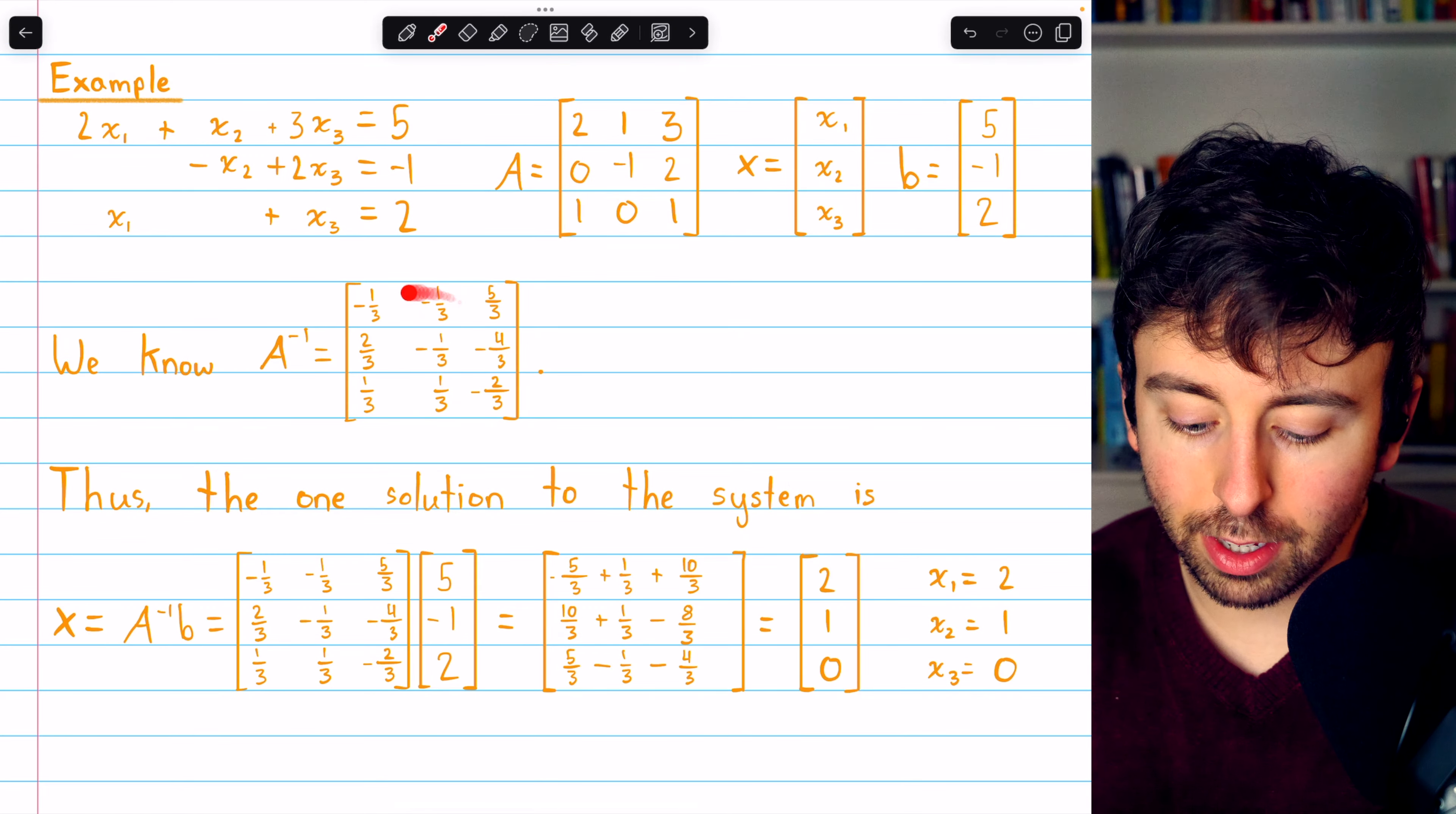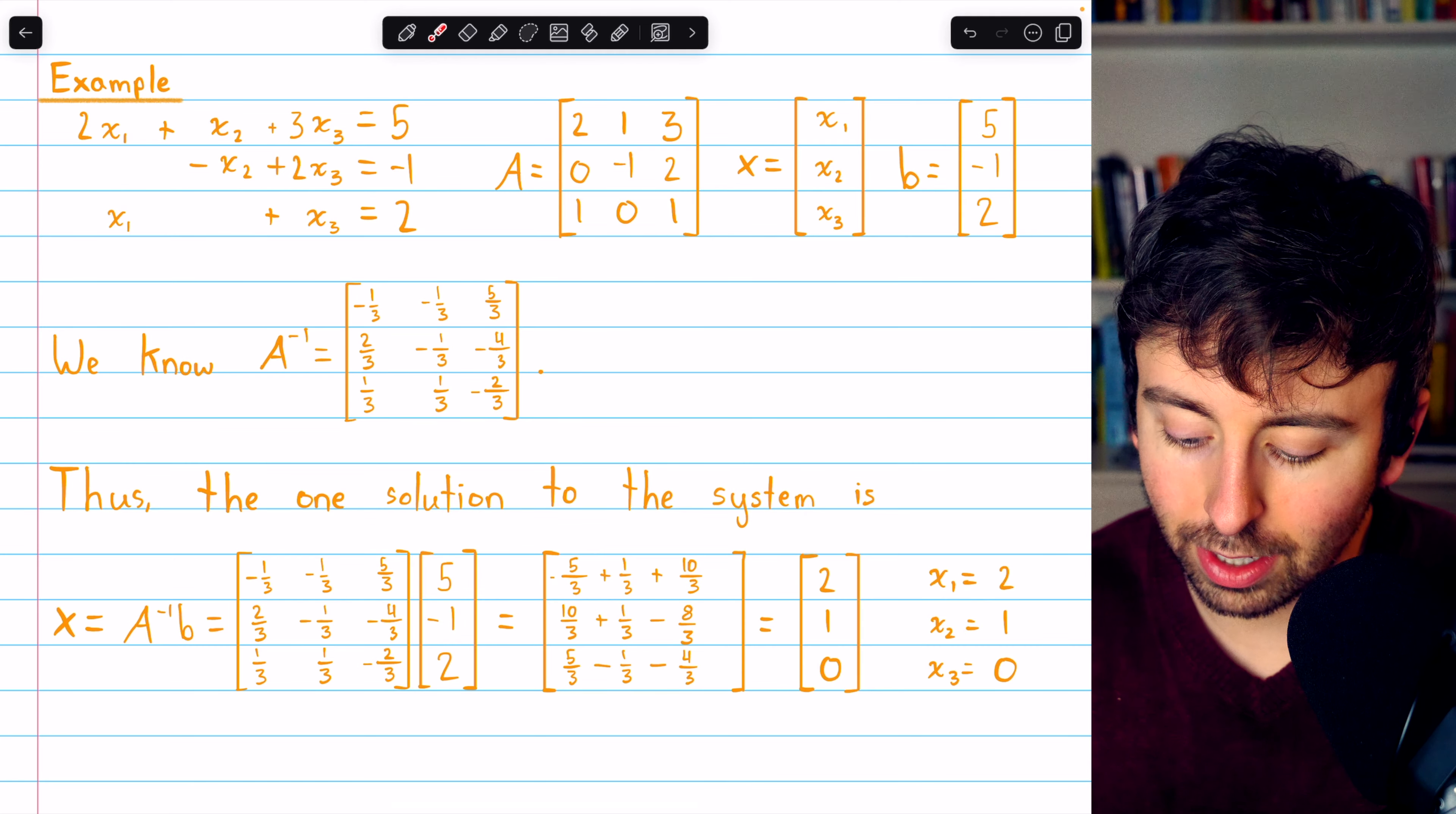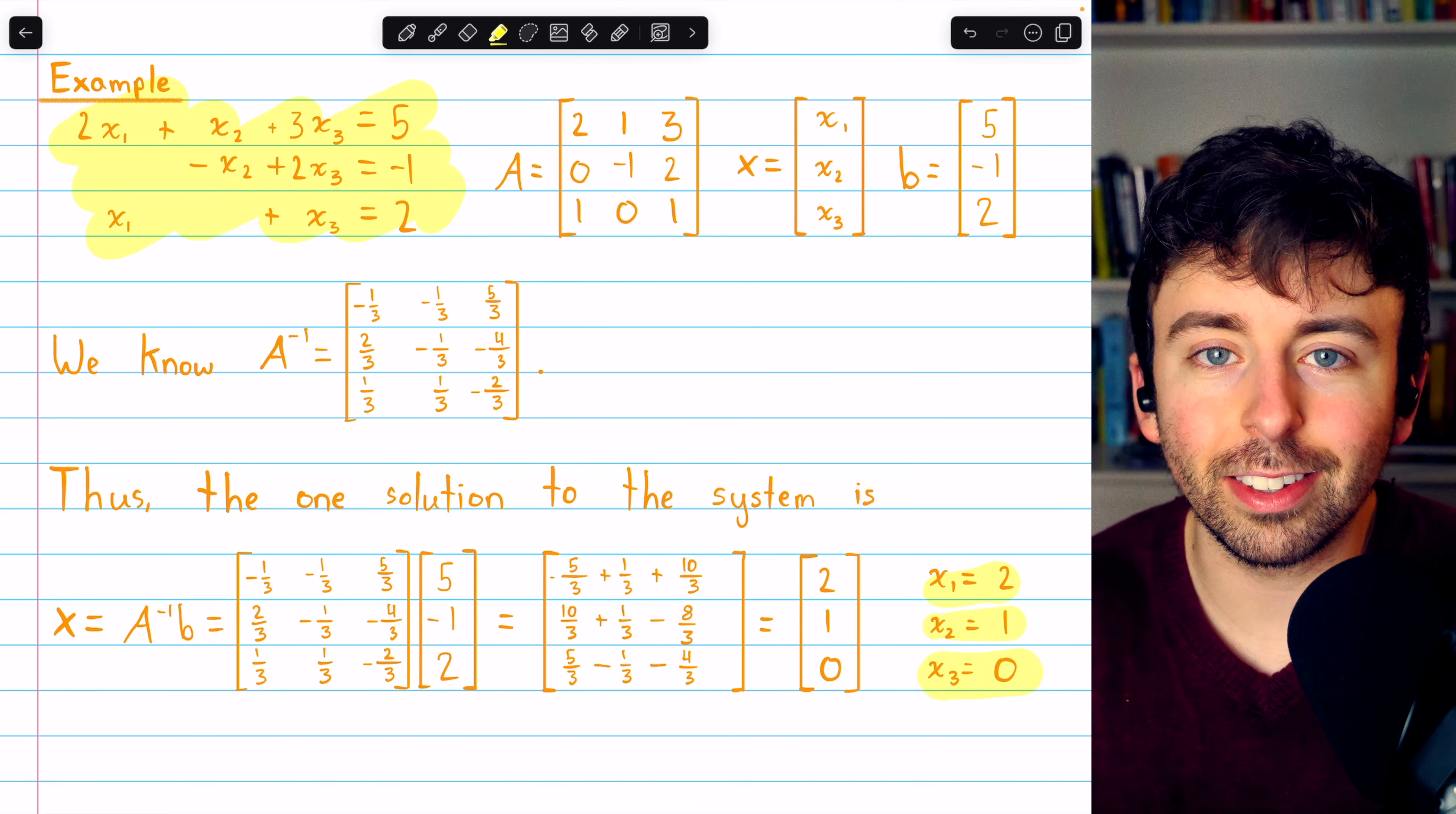The inverse matrix is pretty ugly with all of these fractions, but once we do the multiplication, taking A inverse and multiplying it by our constant column vector, everything works out pretty nice. We end up getting 2, 1, and 0. So the unique solution to this system of equations is x1 equals 2, x2 equals 1, and x3 equals 0.